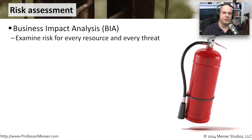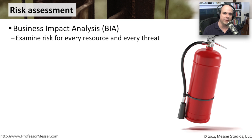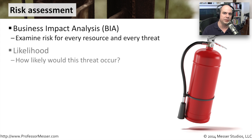There are many different ways to assess the risks that might be in your environment and the resources that are available. One common thing you can do is a business impact analysis. You need to understand what resources you have in your environment, what services you're making available to other people, and the things that are important to your organization. Then you need to think about the threats that are out there that might have an impact on those particular resources.